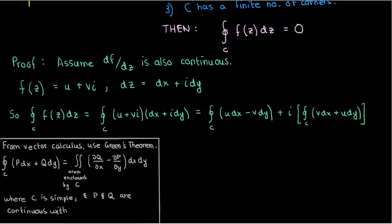In terms of two-dimensional vector fields, it just means that the line integral of a vector field on a closed loop equals the double integral of the curl of that vector field over the area enclosed by that loop. We can apply Green's theorem to both the first and second integrals in this expression.